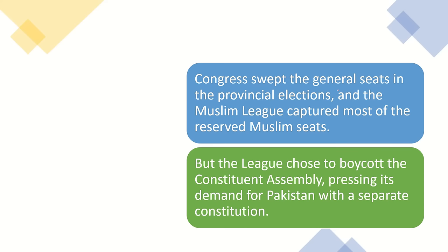Congress won in general elections, while the Muslim League captured the Muslim reserved seats. However, the League boycotted the Constituent Assembly and demanded a separate constitution for Pakistan, saying they should not share one constitution.